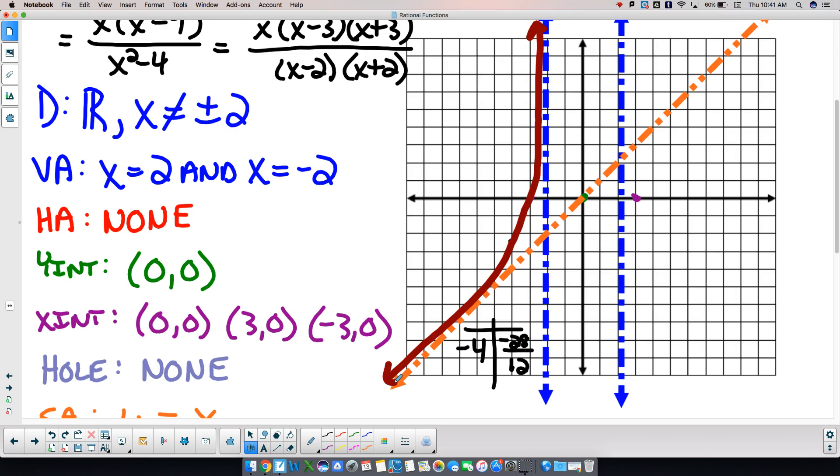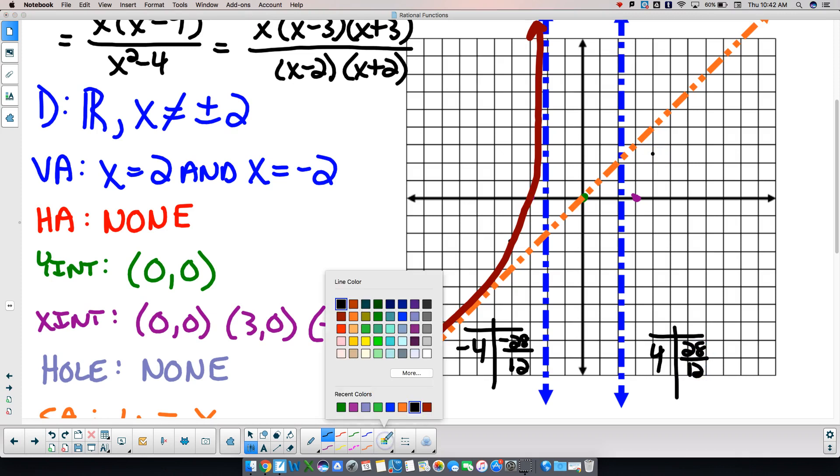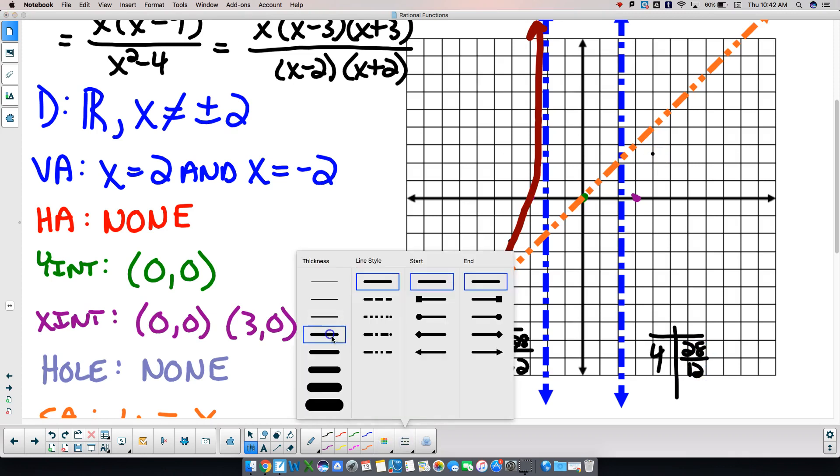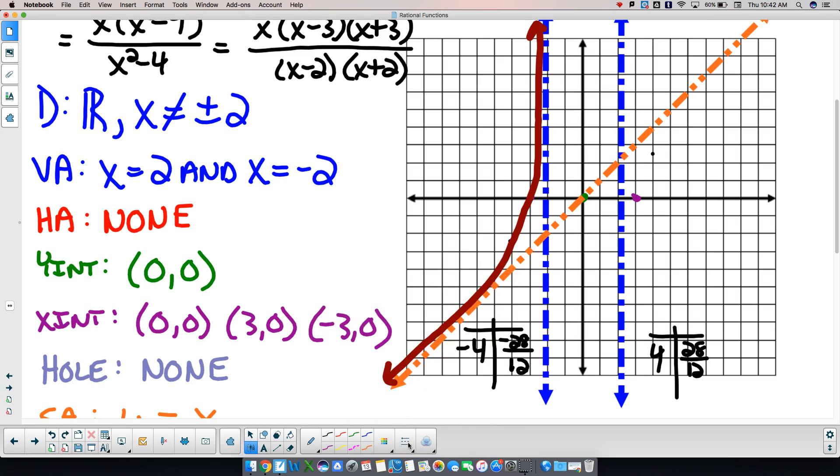Put in positive 4, and the only thing that changes is the top is now positive. So we're at 28 over 12, which is a little bit more than 2. So we're there. And then we can draw it in. And it's going to come along our slant, twist down, hug and hug.